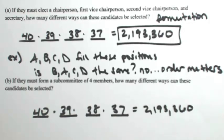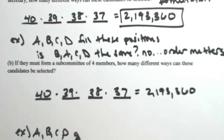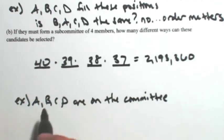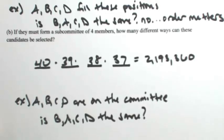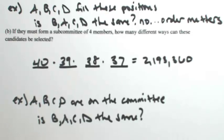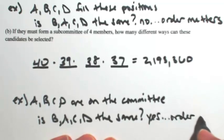And then you ask yourself the follow-up question of, does the order matter? So for example, let's say A, B, C, and D are on the committee. So A, B, C, and D are on the committee. Is, let me just switch two of them, B, A, C, D, the same? Well, yes. Doesn't matter the order in which you put them in the committee. They're all doing the same thing. They have the same kind of position. So this is the same because the order does not matter.